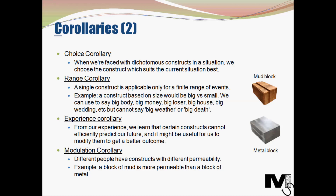The next type of corollary is the range corollary. Kelly proposed that a single construct is applicable only for a finite range of events. The range could be small or large depending on the type of construct. For example, a construct based on size would be big versus small. We can use 'big' in a variety of ways — big body, big money, big loser, big house, big wedding — but do we ever say 'big weather' or 'big death'? No. So range basically elaborates that there is always a finite range of events where a construct is applicable.